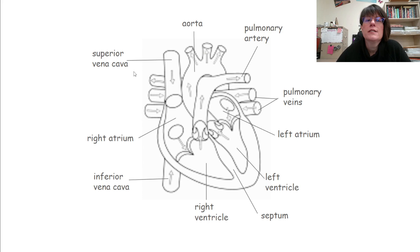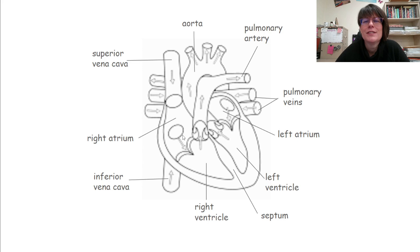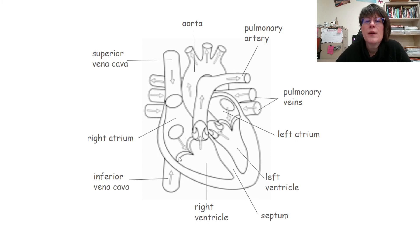Looking at our diagram, here's the superior vena cava, here's the inferior vena cava, and here's the right atrium. One thing to pay attention to is that on the right side of the heart — and remember, this is like somebody laying in front of you on an operating table, so left and right are switched — all of this is deoxygenated blood on the right side.